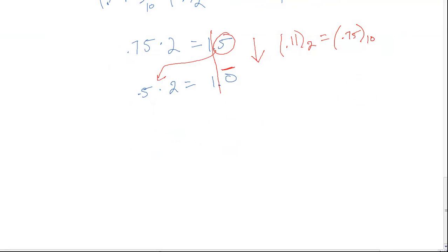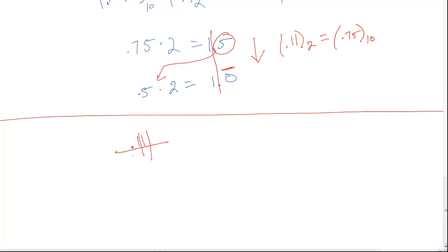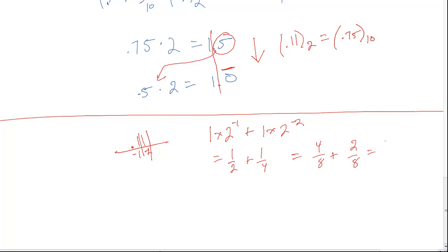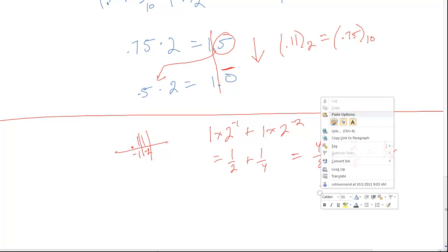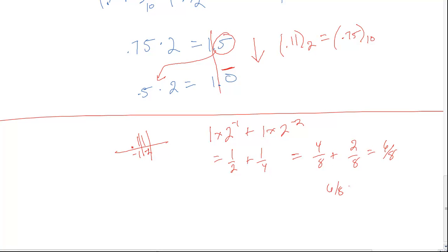So 0.11 in base 2 is equal to 0.75 in base 10. We can check that like we did in the last problem. We'll do 0.11, with our Radix point, and take the place values: negative 1, negative 2. So 1 times 2 to the negative 1, plus 1 times 2 to the negative 2, which equals one half plus one fourth. That's 4 eighths plus 2 eighths, or 6 eighths, and 6 eighths equals 0.75.